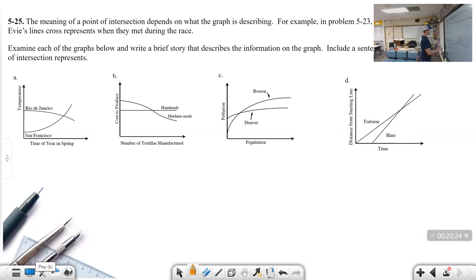The point of intersection depends on the story or the problem that we're dealing with. You are going to look at these four problems and decide what does the point of intersection mean. Let's look at A. Here's the point of intersection. The point of intersection is the time when San Francisco and Rio de Janeiro have the same temperature. Notice I started with the X value, then I read what's in the middle, and then I looked at the Y value.